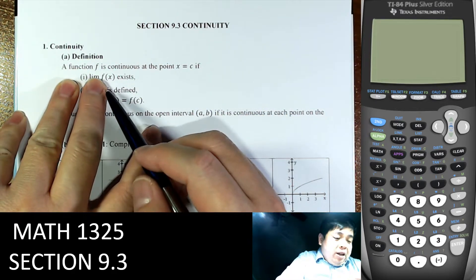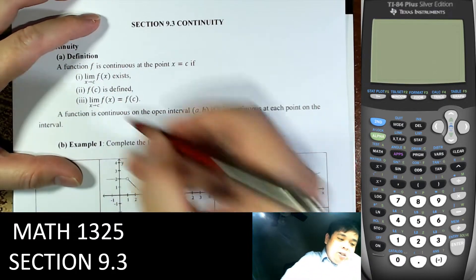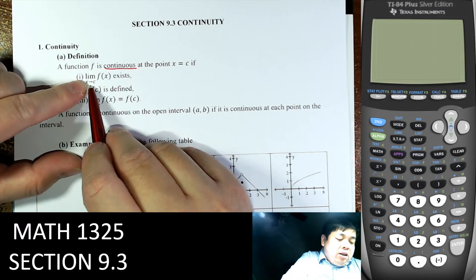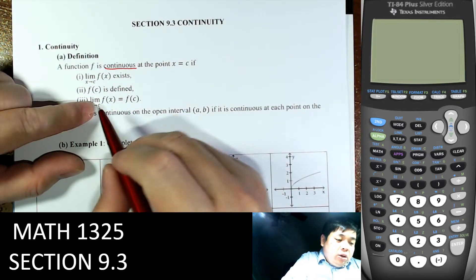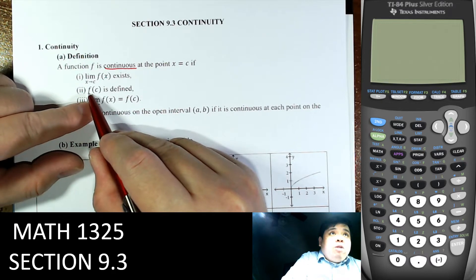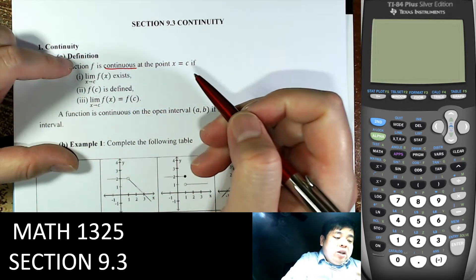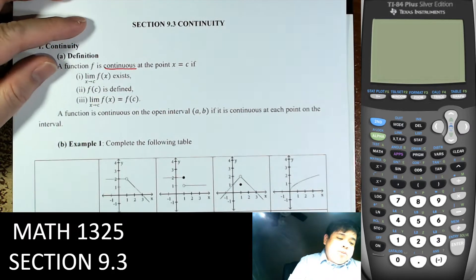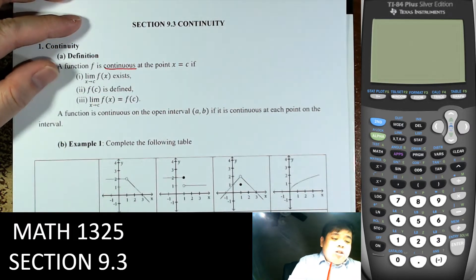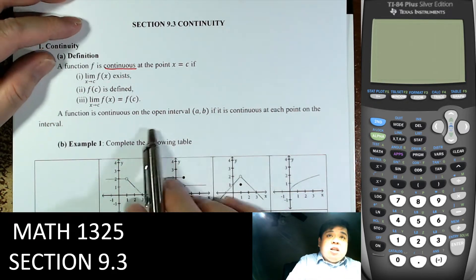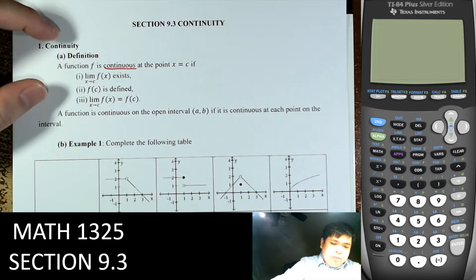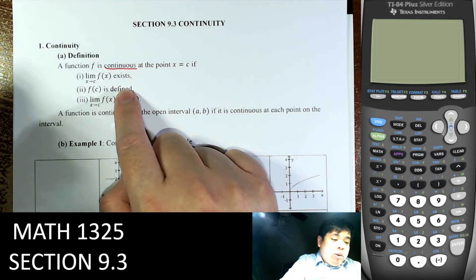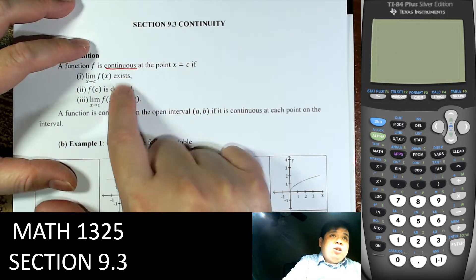A function f is continuous at a point if the limit exists when x goes to that point, the value of the function is defined, and those two are equal. So all three of these need to happen for the function to be continuous. And if the function is continuous on an open interval, it is continuous at every point in that interval.